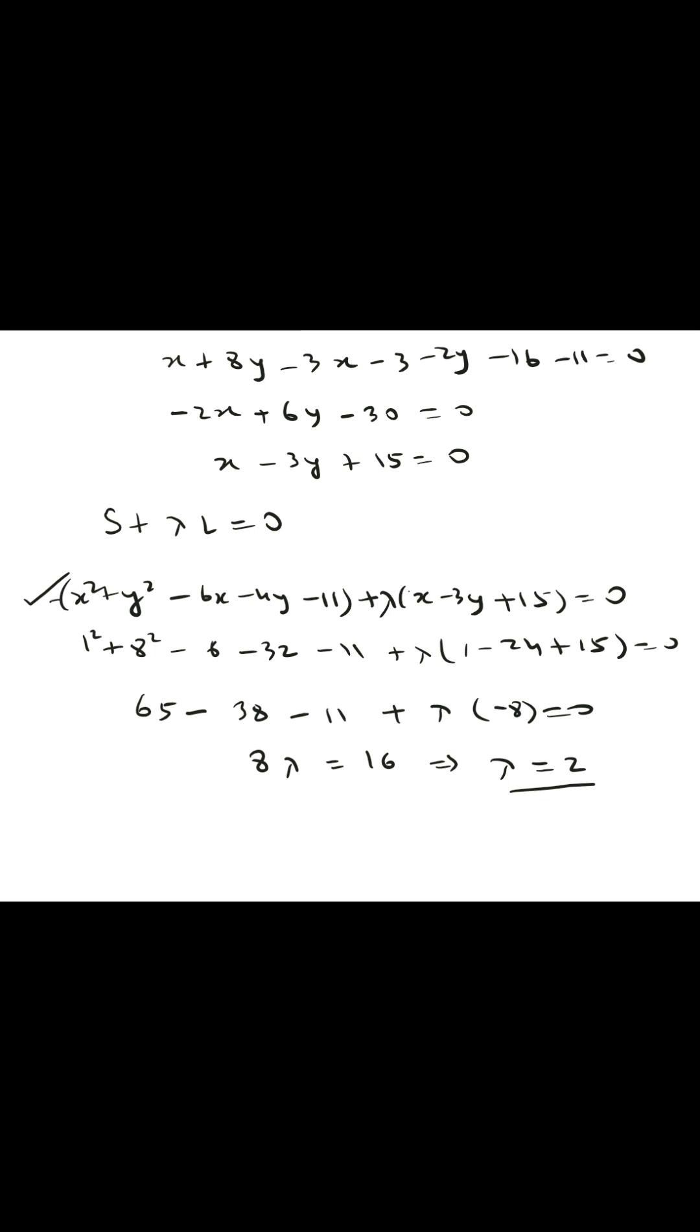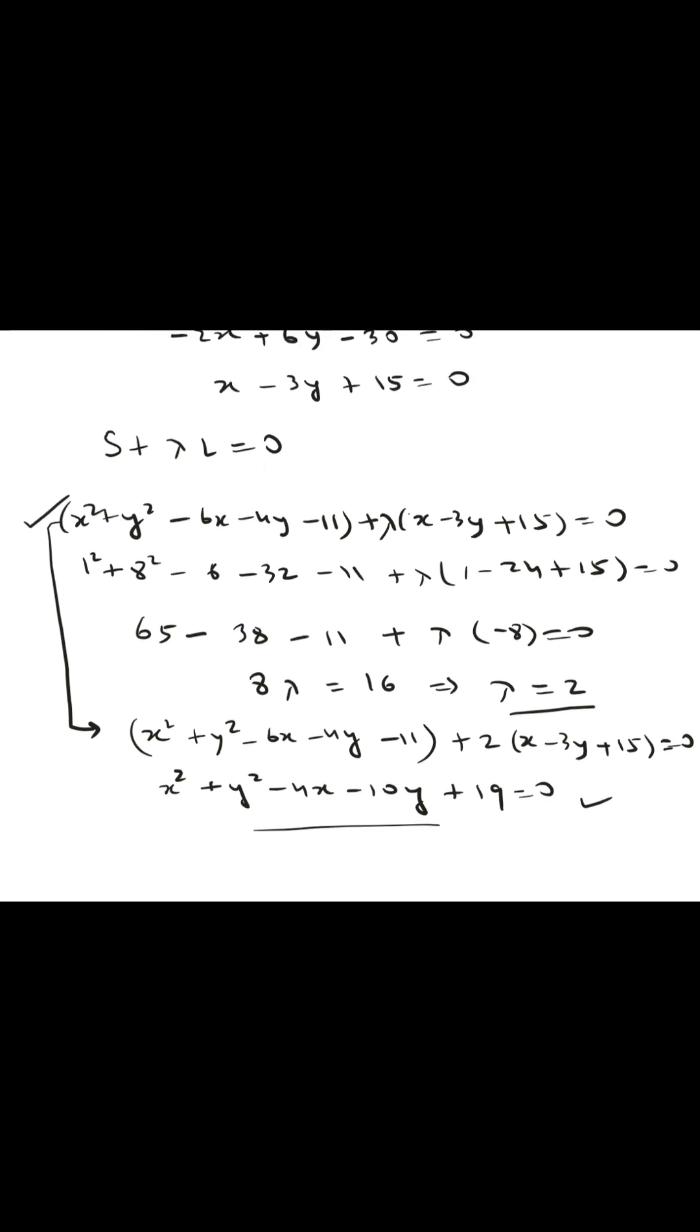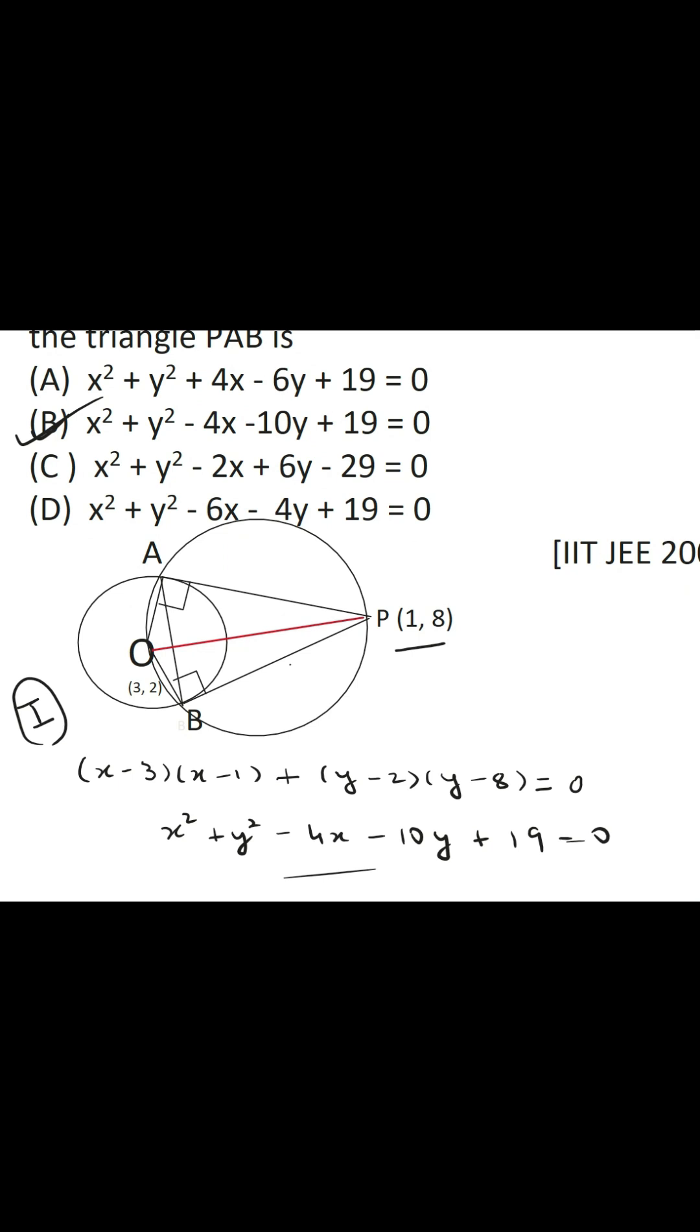Now putting lambda equal to 2, you get the answer. Put lambda = 2 in this equation, you can get back the same answer as you have got in the first method. So this is option B once again as you can see from here.